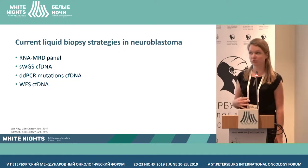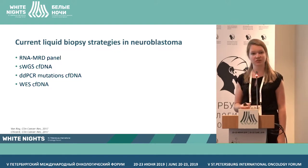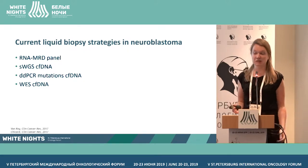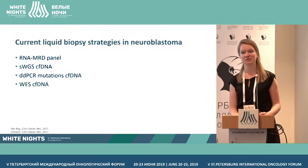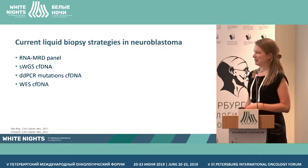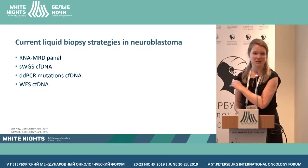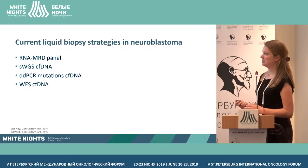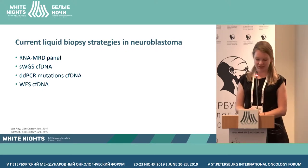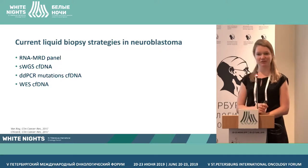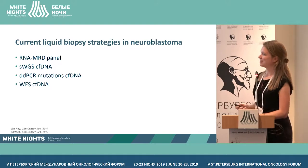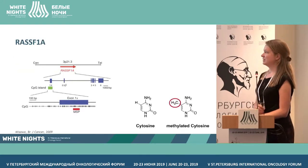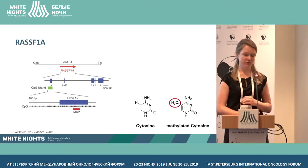Digital droplet PCR for mutations in cell-free DNA — the most common mutation in neuroblastoma is ALK, and it only occurs in 8% to 10% of patients. So we don't have one KRAS mutation we can use for all patients, so that's also not going to work. Whole exome sequencing is really nice, but sensitivity and cost are also problems.